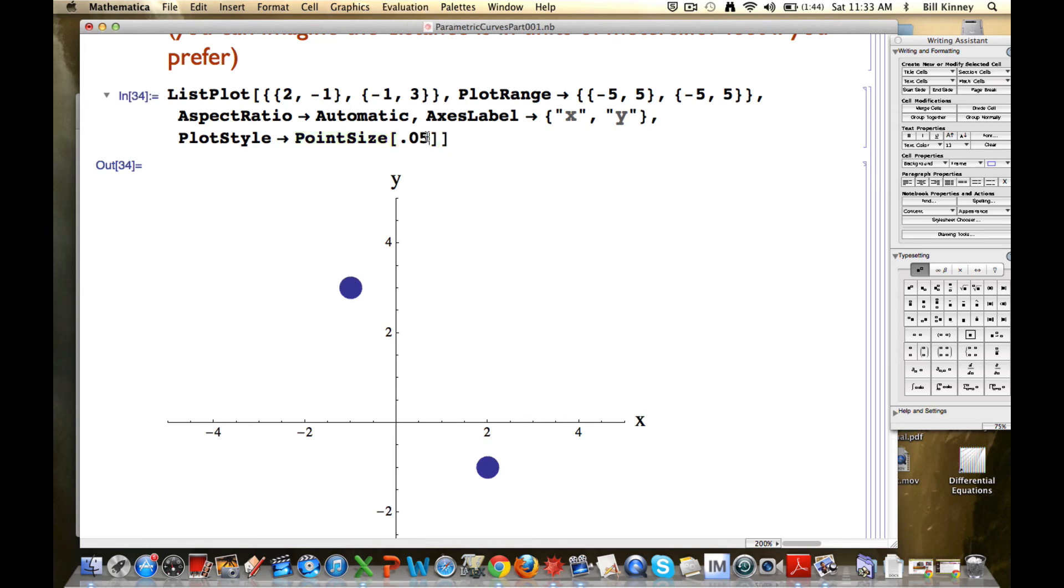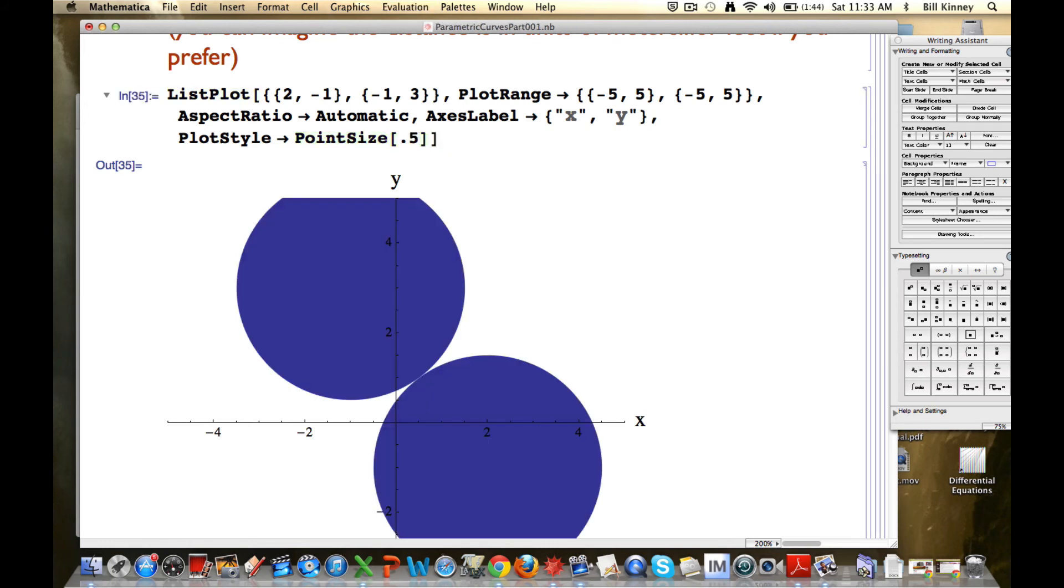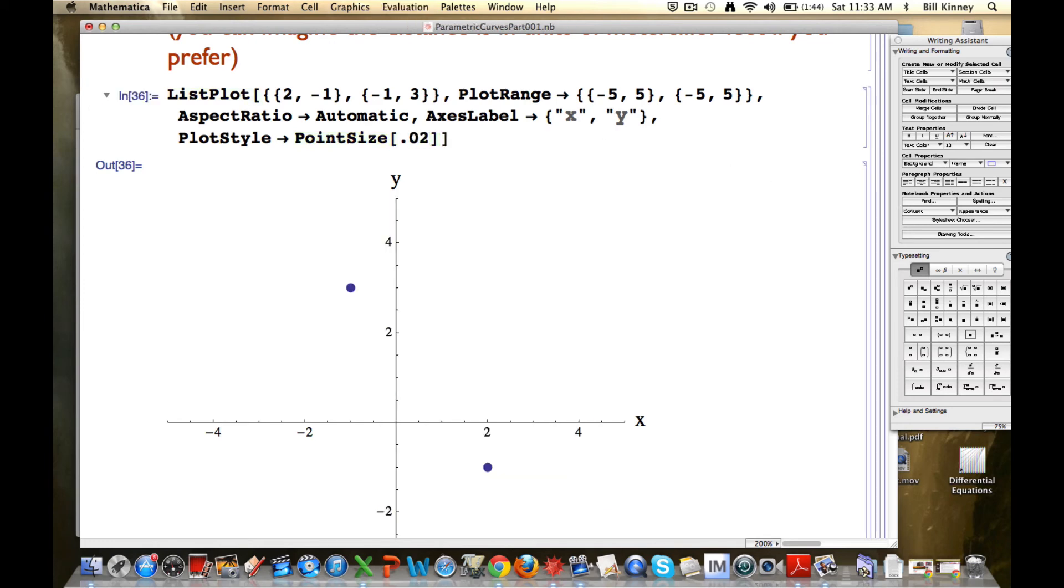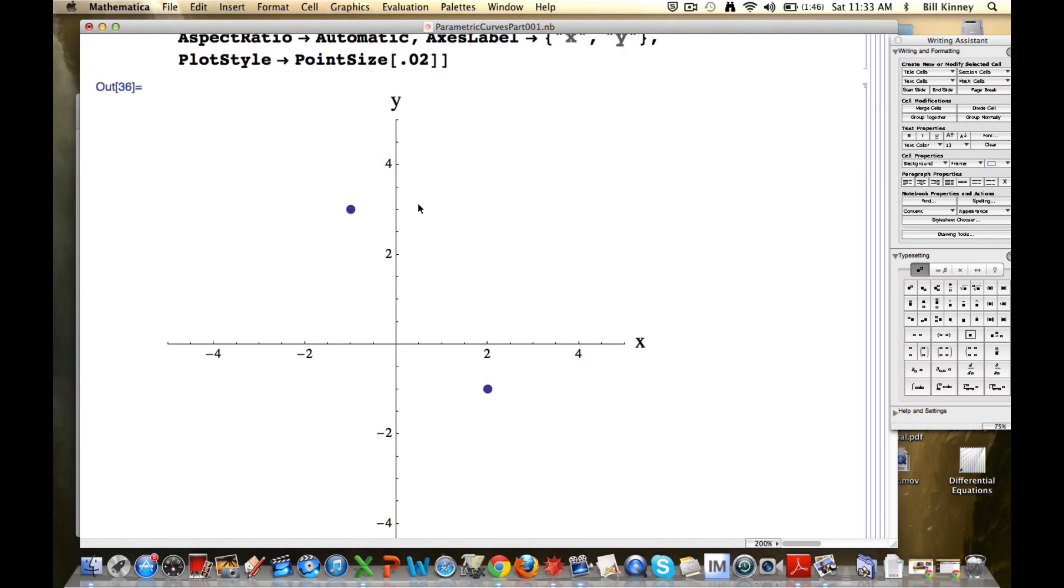If I make it 0.05, that'll be 5%. 0.5, that'll be 50%. Okay, you've got really big dots there. Let's go to 0.02 again. I can add other options. I can change the color and that kind of thing. But to finish off this first video about parametric curves, let's just think about what's going on here with the actual math, with the actual motion.